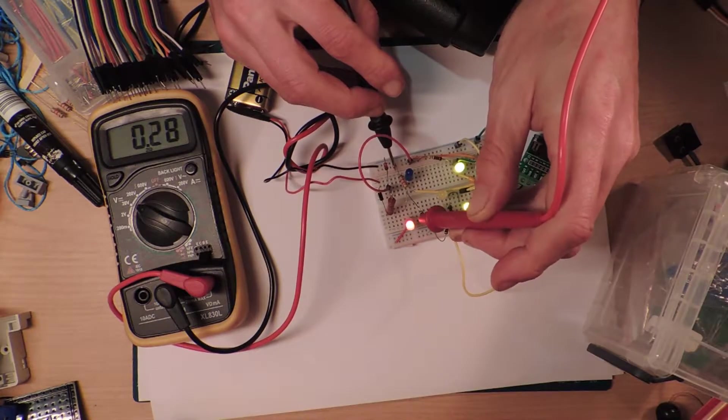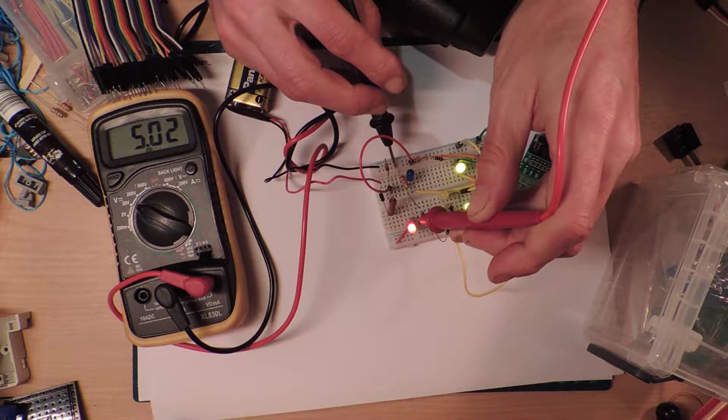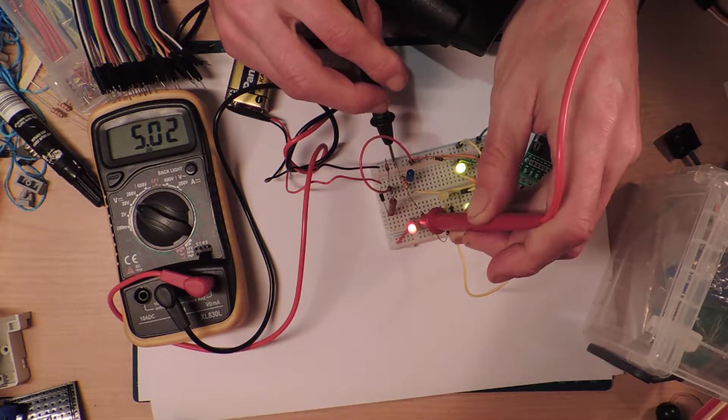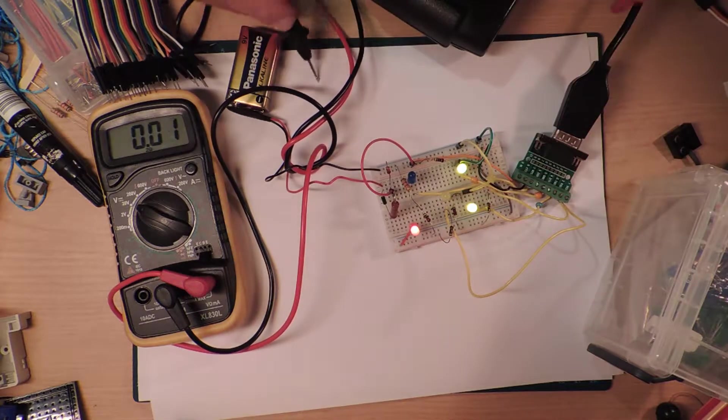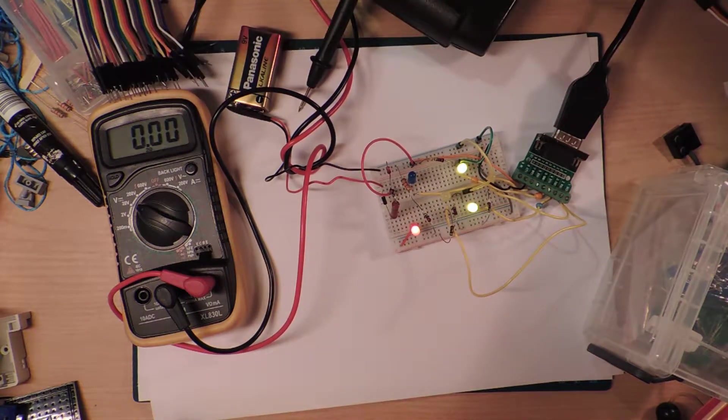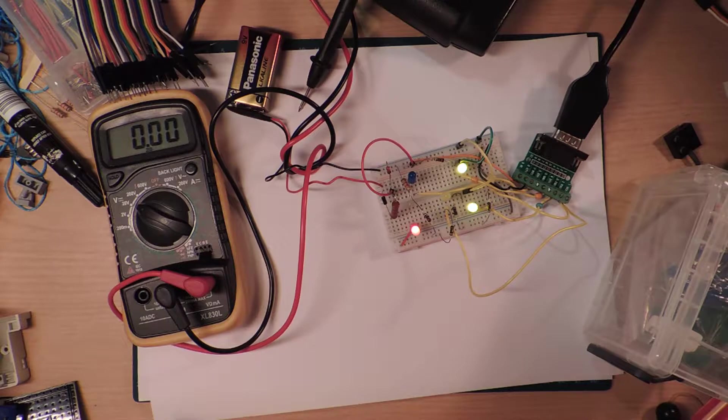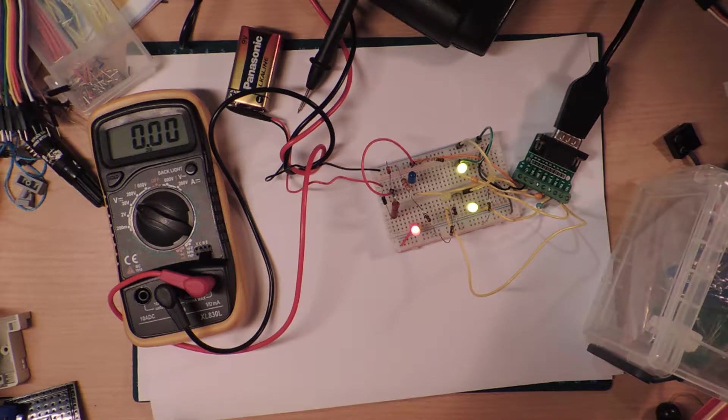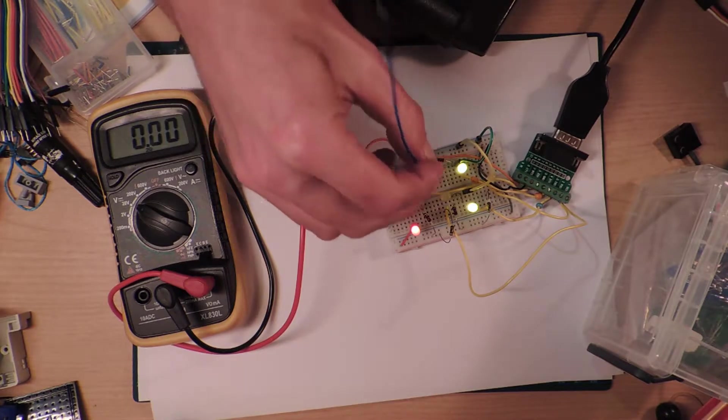And. We are. Currently reading. 5.02. So, with. Two. LEDs on. Three. LEDs on. We've got a slight drop. Down. So, we need to put one on. Because. In actual use. We're only going to ever have. Three. Potential. LEDs on at once.